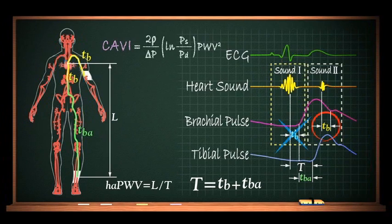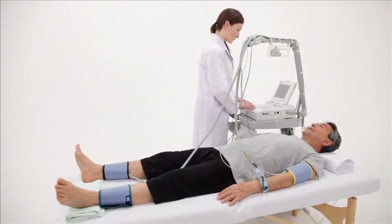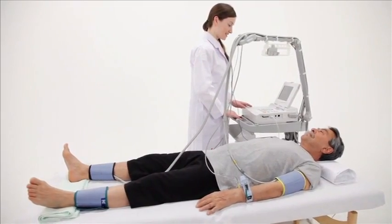Therefore, CAVI is simply the stiffness parameter beta and HAPWV. CAVI is an index evaluating the average arterial stiffness between the heart and ankle.